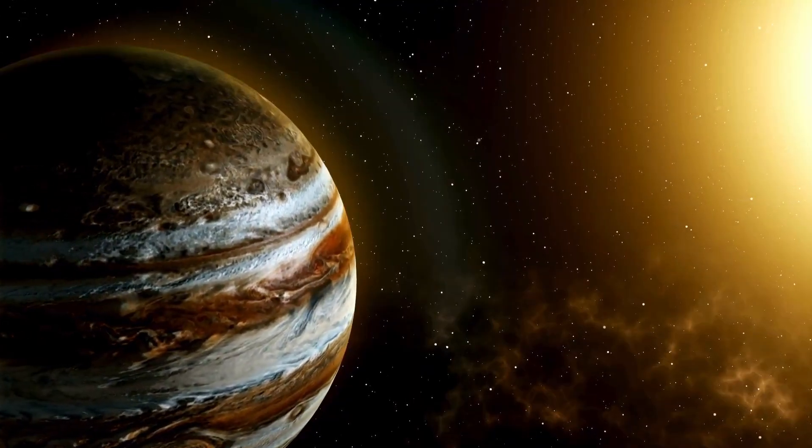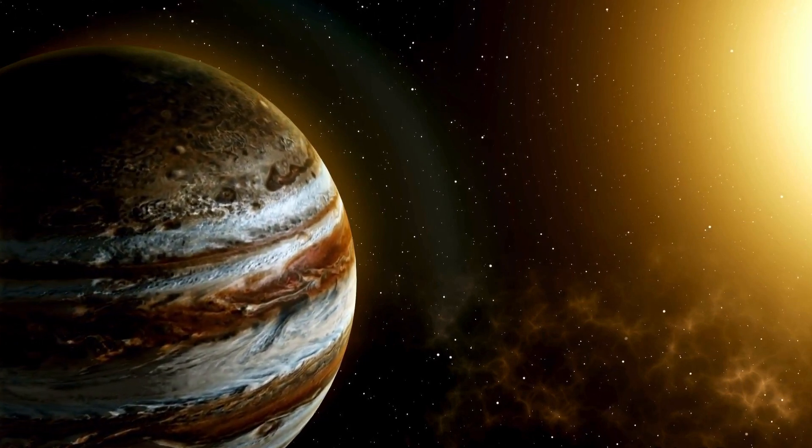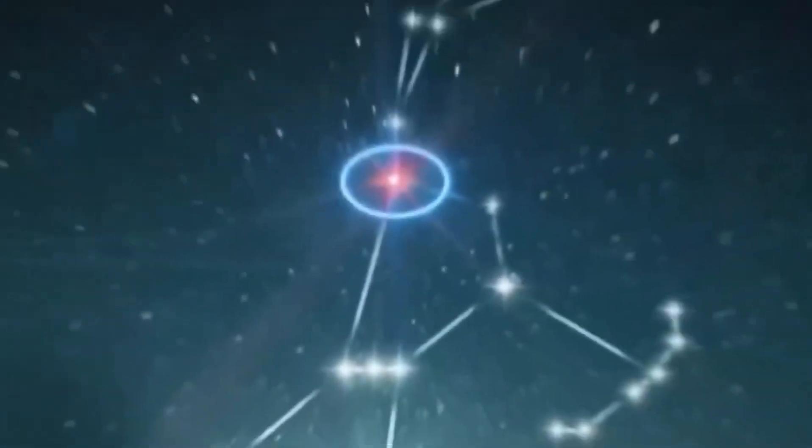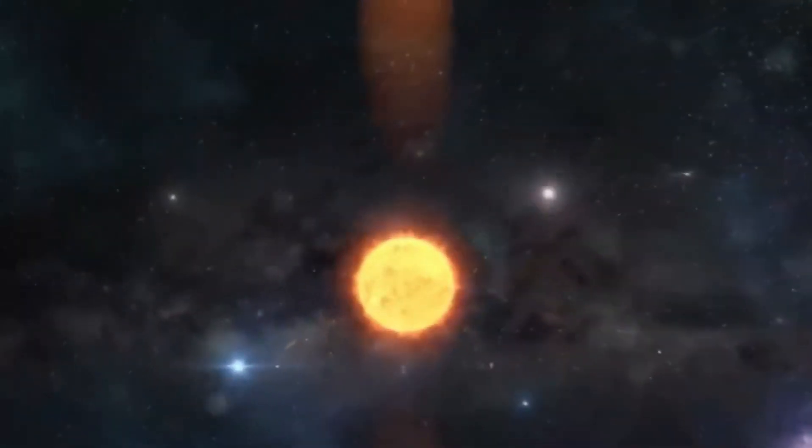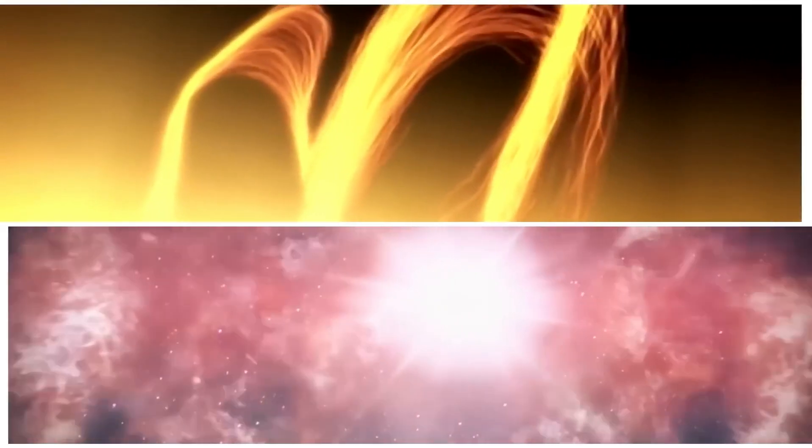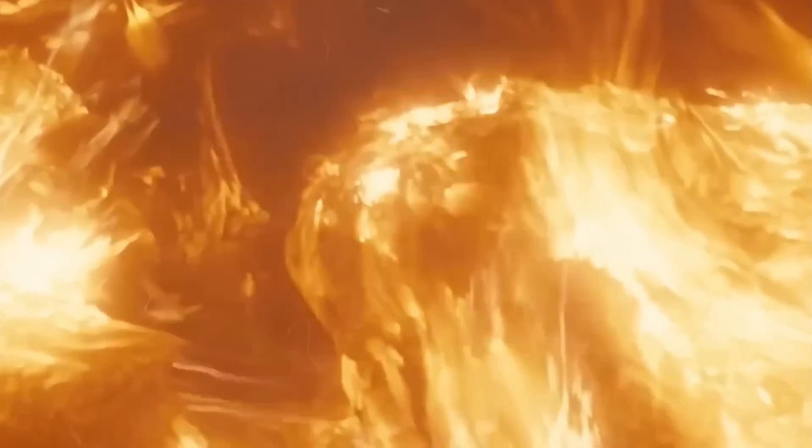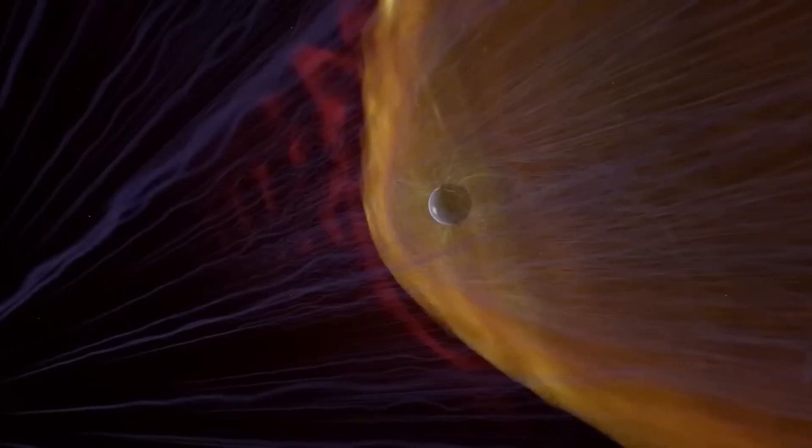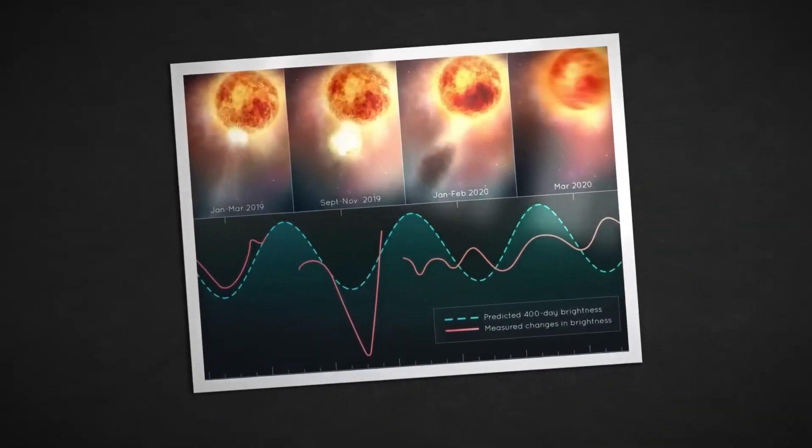Stars are not just twinkling dots in our night sky. They are dynamic entities with life cycles, activities, and mysteries of their own. For many celestial bodies, periodic brightness variations can be predicted, much like the rhythms of Earth seasons. In its stellar lifetime, Betelgeuse has clocked in a fairly consistent 400-day luminosity cycle, but with the great dimming, it seemed to rebel against its known nature, challenging our understanding of the celestial wonders above.